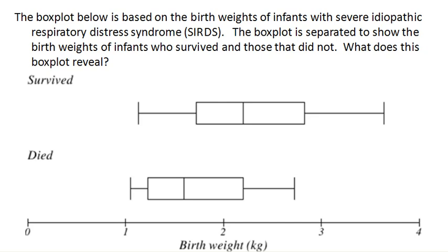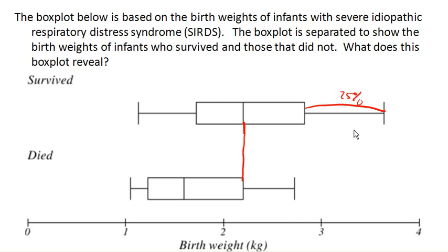We can tell that the birth weights of infants that died appear overall to be smaller than the birth weight of the infants that survived. In fact, we can see that the median birth weight of those that survived is about the same as quartile three of the birth weight of those that died. This means that 25% of infants that survived were heavier than all of the infants that died.